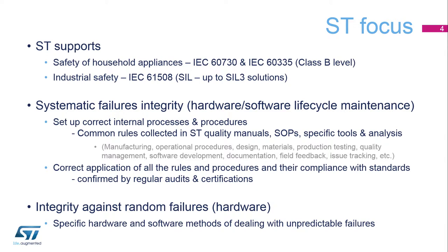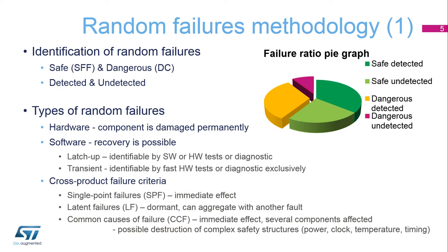To ensure integrity against random failures, specific software methods and hardware design techniques must be applied as described in the following slides. Not all random failures result in a hazardous event, and they may even be considered safe from a safety point of view. Basically, safety standards require monitoring to detect dangerous failures that may be directly or indirectly related to safety and have the potential to cause a dangerous situation. Both safe and dangerous errors can either be detected or stay hidden and undetected by the system. The more often dangerous errors are discovered and prevented in time, the more the probability of a failure propagating into a hazardous event decreases.